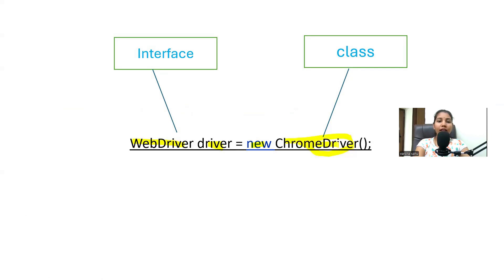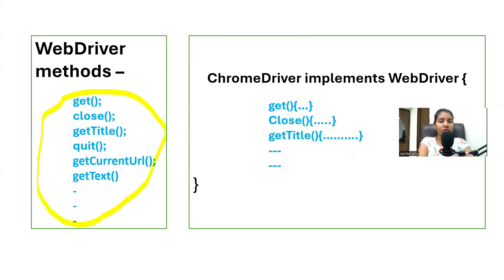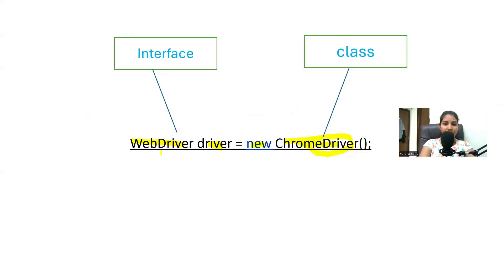The WebDriver interface has a set of methods. Inside this WebDriver interface we have the very basic Selenium methods like `get`, `close`, `getTitle`, and so on. These are the very basic Selenium methods declared inside the WebDriver interface.